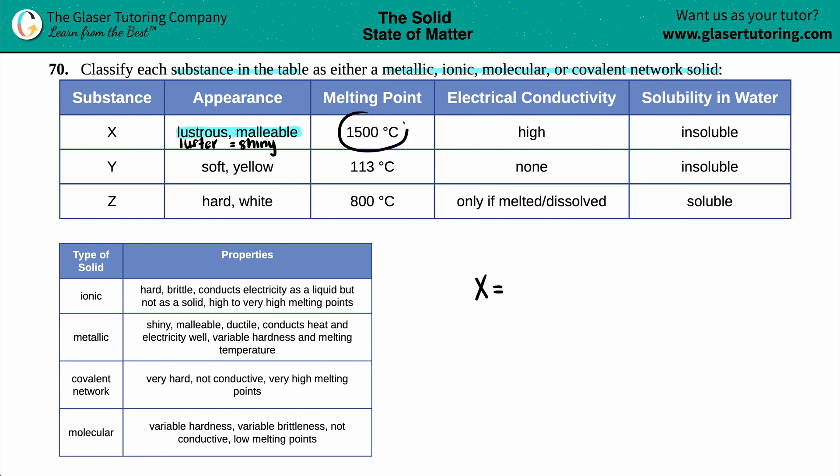It's got a crazy high melting point. In the grand scheme of things, if we look at these three melting points, 1500 is the highest out of 113 and 800. So this is a high melting point. It conducts electricity high. So that means that if you try to probe it, it's going to make a light bulb turn on.